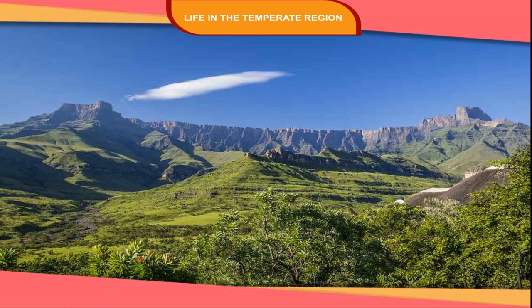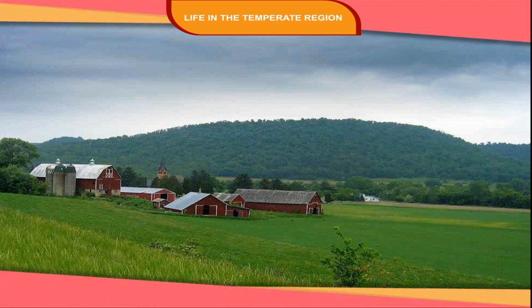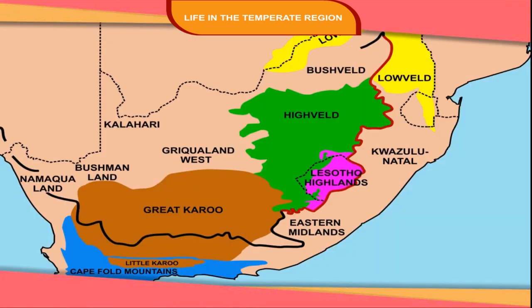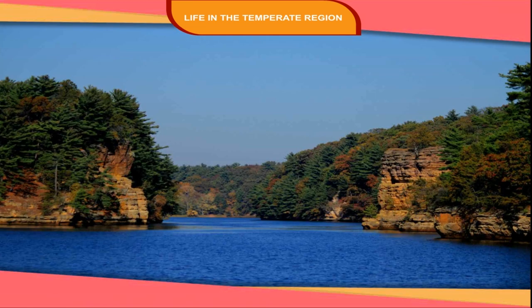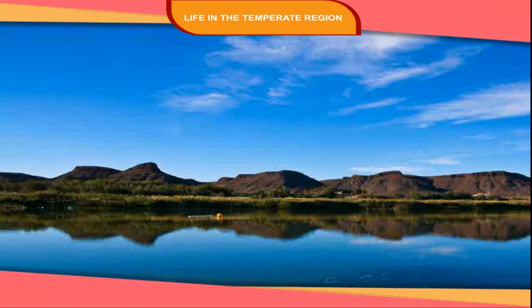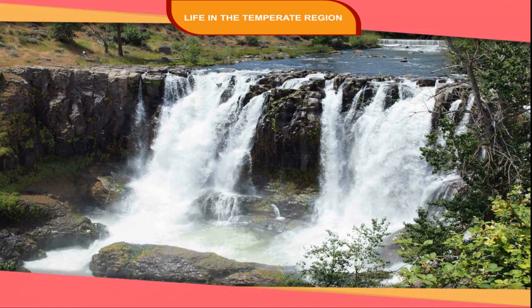Land and Climate: The Veld lies on a plateau which forms a series of steps. Lying just west of the Drakensberg, the elevation in the High Veld varies from 1,200 m to 1,800 m. The High Veld descends to the Mid Veld with elevations between 1,200 m and 600 m towards the south and northeast. Then in the northeast, the Mid Veld descends into the Low Veld with elevations between 600 m and 150 m. Some of the rivers that flow through the Veld are the Limpopo, the Sabi, and the Orange and its tributary, the Vaal. There are waterfalls where the rivers descend the steps formed by the plateau.